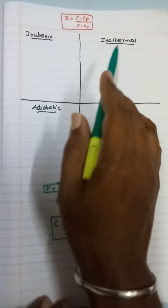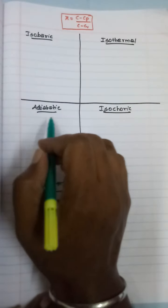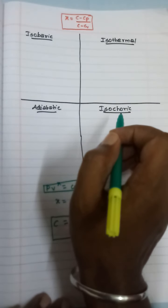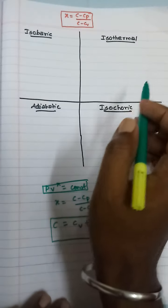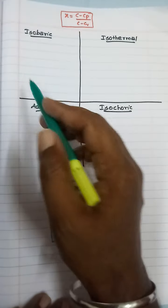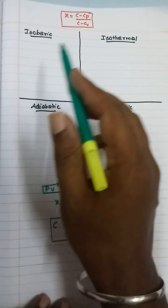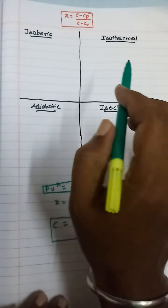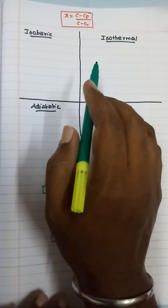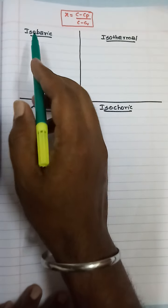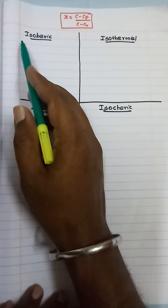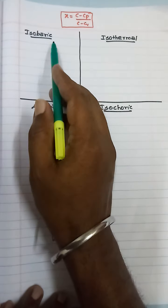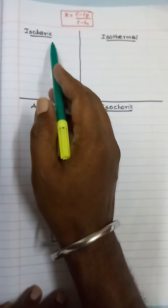The processes we will cover are isobaric, isothermal, adiabatic, and isochoric. These processes all come under the polytropic process.